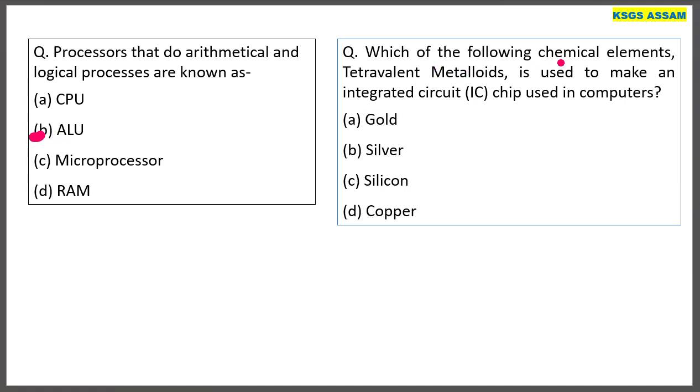Which of the following chemical elements that travel in metalloids is used to make an integrated circuit? The answer is Silicon.